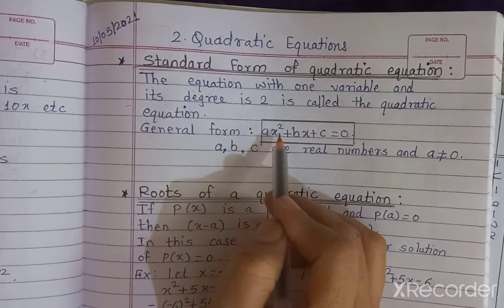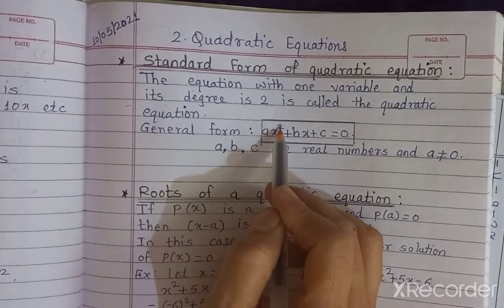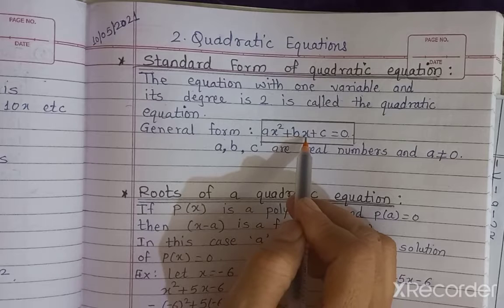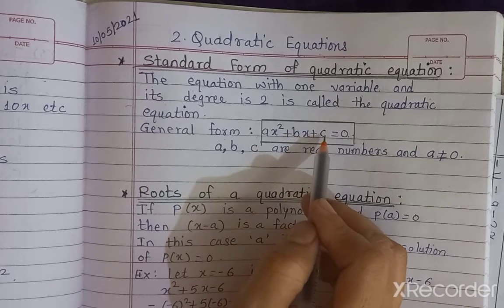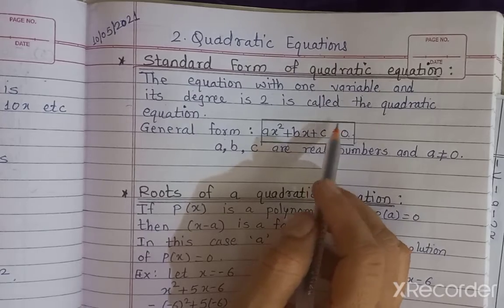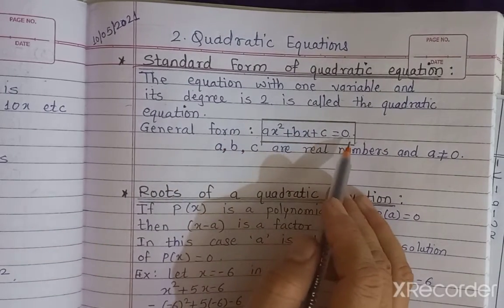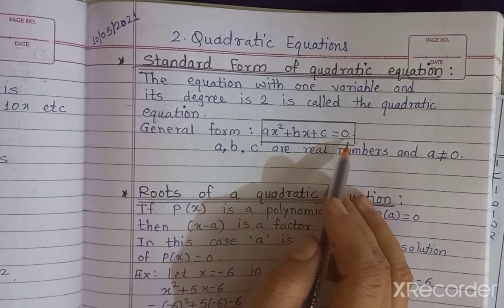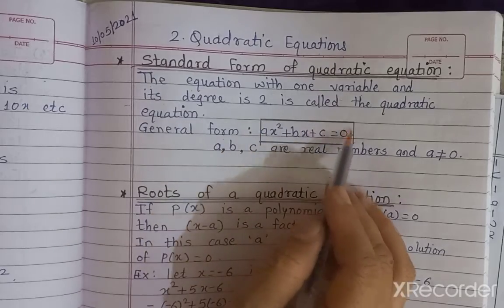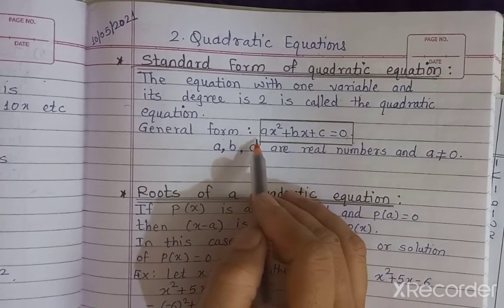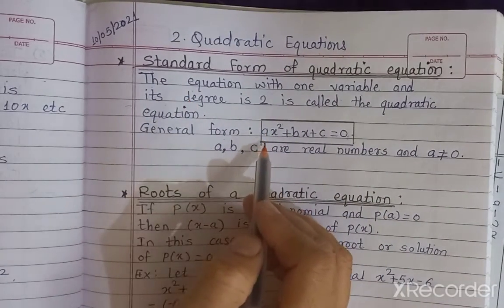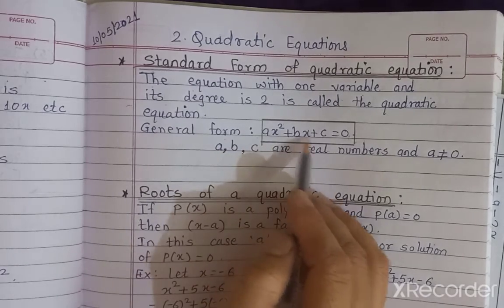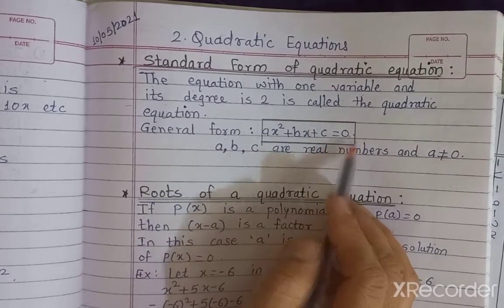In the first term the power of x is 2. In the second term the power of x is 1. And in the constant term the power of x is 0. So the powers are in decreasing order. This is the general form, also called the standard form of the quadratic equation: ax² + bx + c = 0.